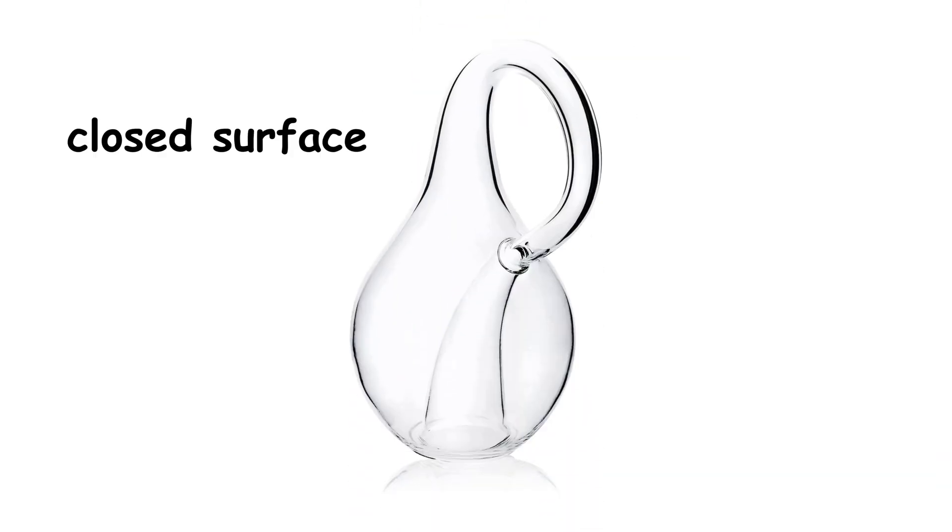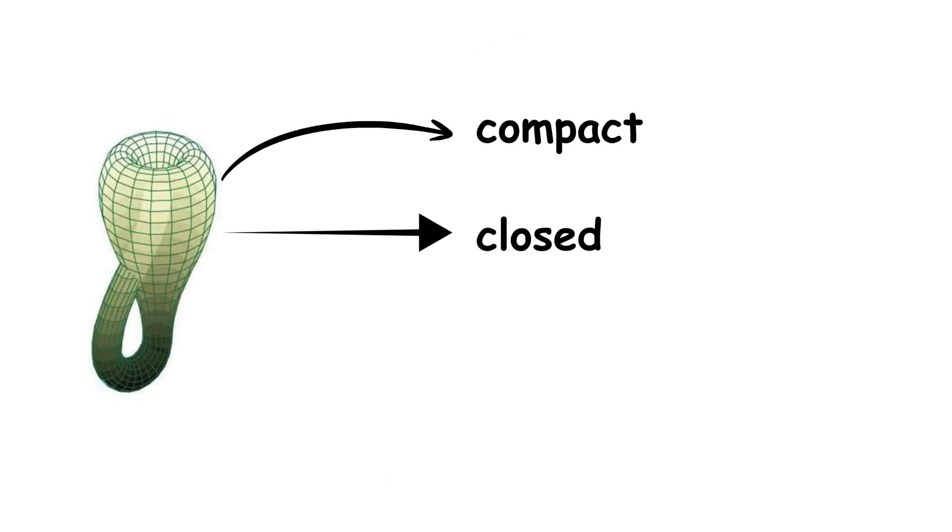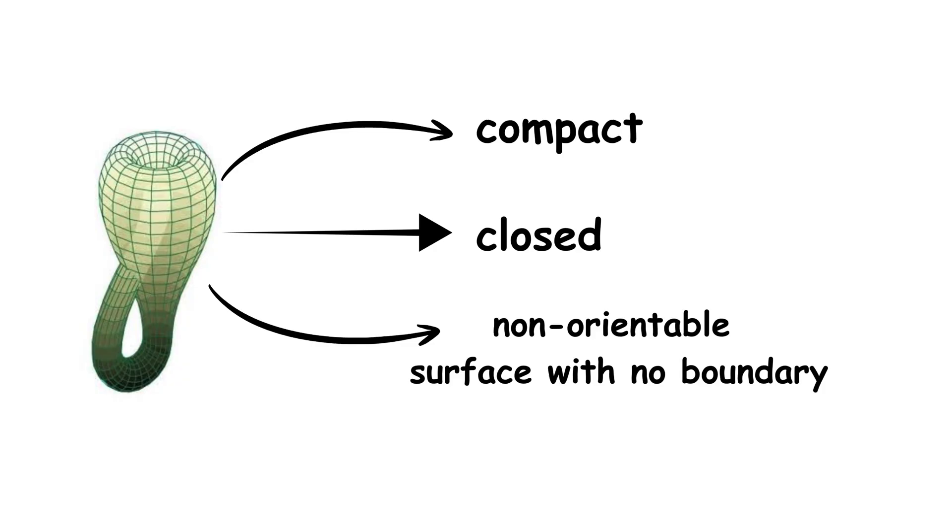Geometrically, it is a closed surface that cannot be represented in three-dimensional space without its surface intersecting itself. Topologically, the Klein Bottle is a compact, closed, non-orientable surface with no boundary.